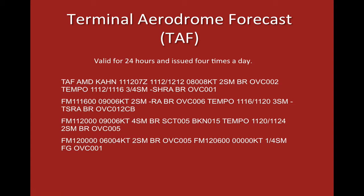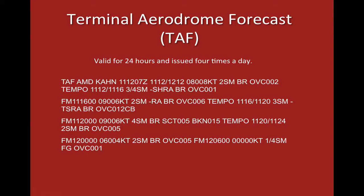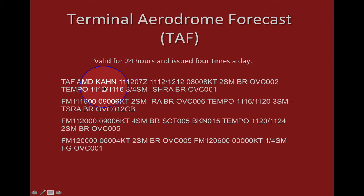We've got a TAF — and it's an amended TAF, by the way. An amendment means they made this TAF on an off-schedule from the typical every-six-hours issuance, and that's usually because something significant changed. This is for KAHN, which is Athens, Georgia. We have the timestamp again — the 11th day of the month. You should know the month you're living in.